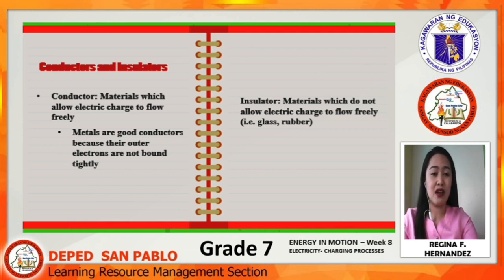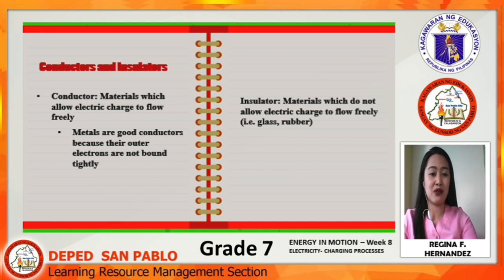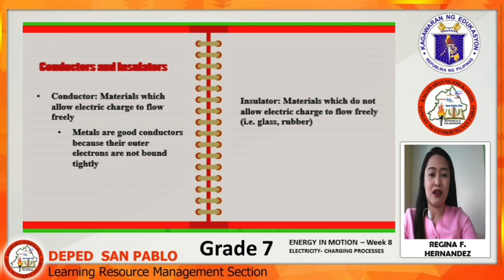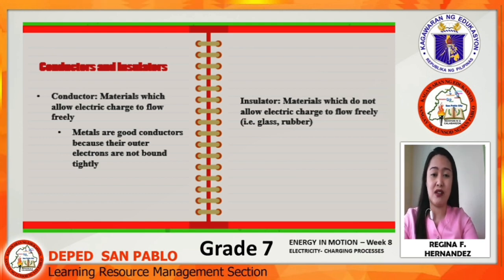Before we proceed, let us define conductors and insulators. Conductors are materials which allow electric charge to flow freely. Good examples of conductors are metals because their outer electrons are not tightly bound. In contrast, insulators are materials which do not allow electric charge to flow freely. Examples include glass, rubber bands, and porcelain.